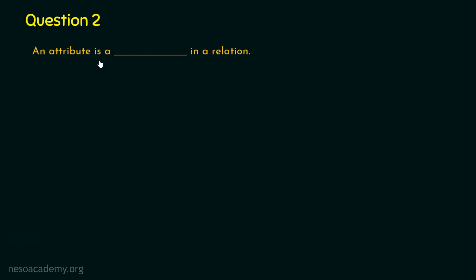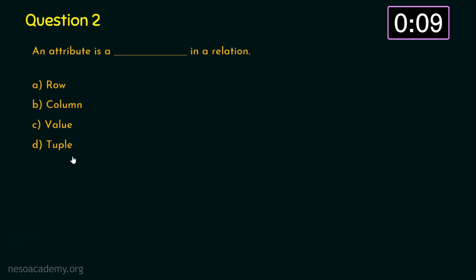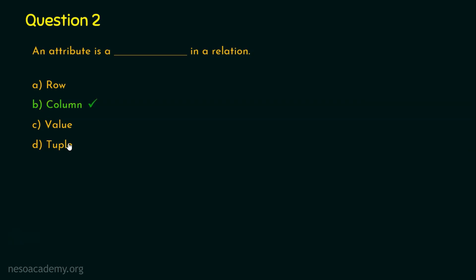Question number two: an attribute is a dash in a relation. Option A: row. Option B: column. Option C: value. Option D: tuple. The right answer is option B, column, because an attribute is a column in RDBMS. A row is referred to as a tuple, and a value is a constant.